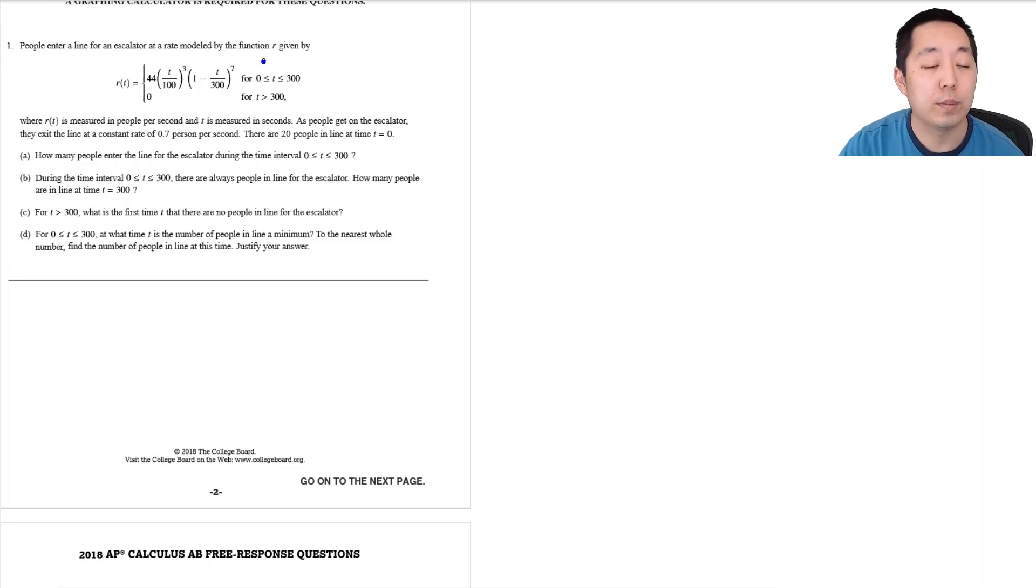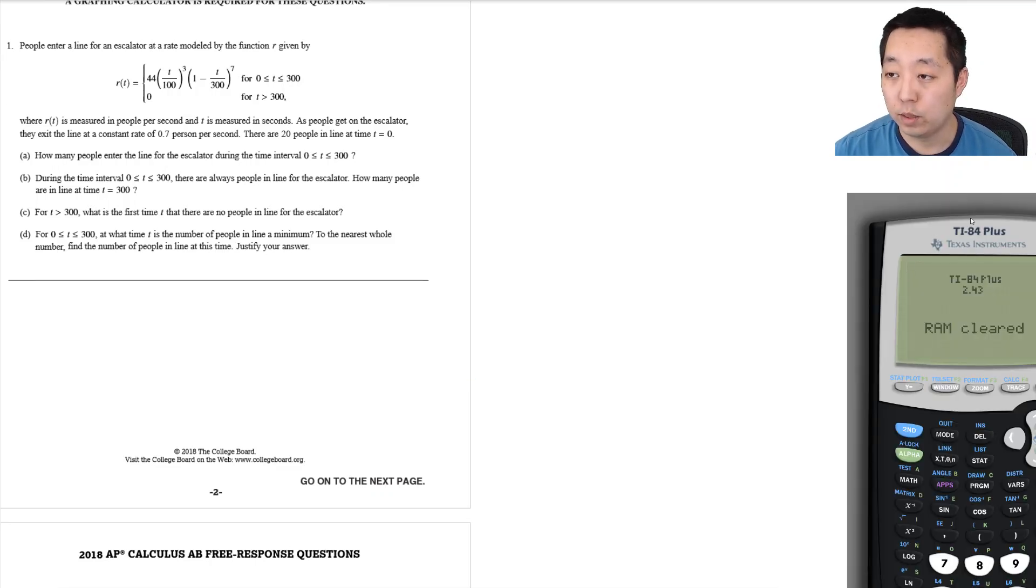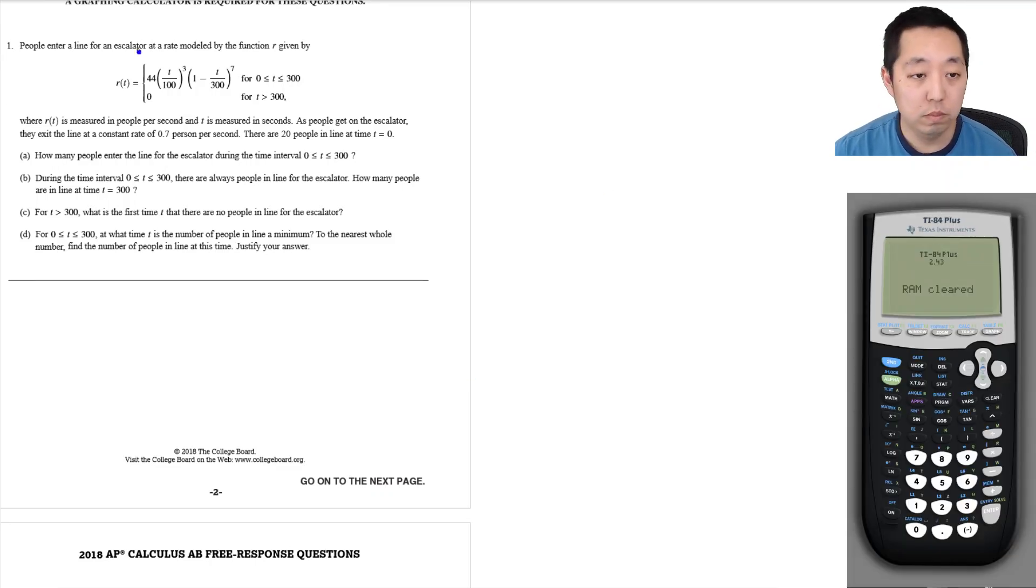People enter in line for an escalator at a rate modeled by the function r(t), where r(t) is measured in people per second and t is measured in seconds. As people get on the escalator, they exit the line at a constant rate of 0.7 persons per second. There are 20 people in line at time t equals zero.